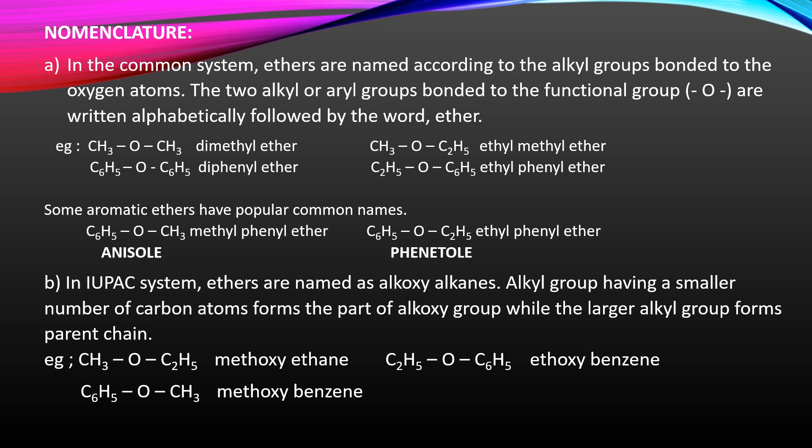Next example: C2H5OC6H5 — the smaller group is ethyl, so ethyl attached with oxygen forms the ethoxy group, and the larger aryl group C6H5 forms the parent chain: ethoxybenzene. For C6H5OCH3, the smaller group is CH3 which forms the methoxy group, and the phenyl group forms the parent chain: methoxybenzene.